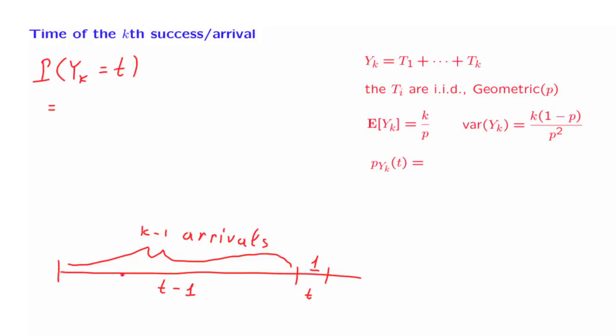Now, this event k-1 arrivals in t-1 slots is an event that's completely determined by whatever happens in the first t-1 time slots. Whereas the event of an arrival at slot time t refers to whatever happens during slot time t. Because of our assumptions on the Bernoulli process, whatever happens during these t-1 time slots is independent from what happens in slot number t. So the probability of these two events happening because of independence will be the probability of the first event happening, k-1 arrivals in time t-1 times the probability of an arrival at time t.